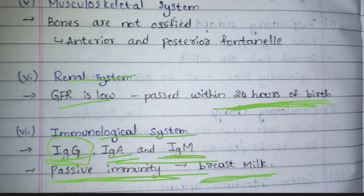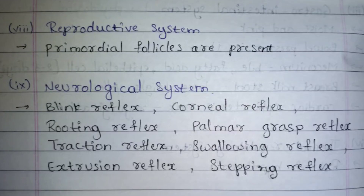The immunity available from mother to baby after birth is through breast milk, and this immunity is known as passive immunity. In the reproductive system, only primordial follicles — the primary sex organs — will be present at birth. The secondary sex organs will start to develop at the time of puberty.